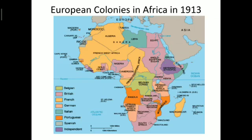After Europeans had reached India by going around Africa, these Europeans started halting at African ports. Slowly, the Portuguese, Dutch, English, French and Germans gained a foothold in the interior and colonized these areas. The political map of Africa at the close of the 19th century, shown here, indicates the regions colonized by the European powers.